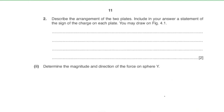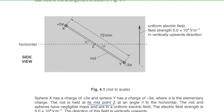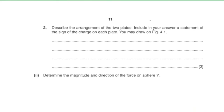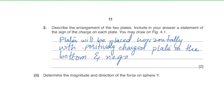Describe the arrangement of the two plates, including the sign of the charge on each plate. Since the electric field direction is vertically upwards, the plates are placed horizontally, with the positively charged plate at the bottom and the negatively charged plate on top.